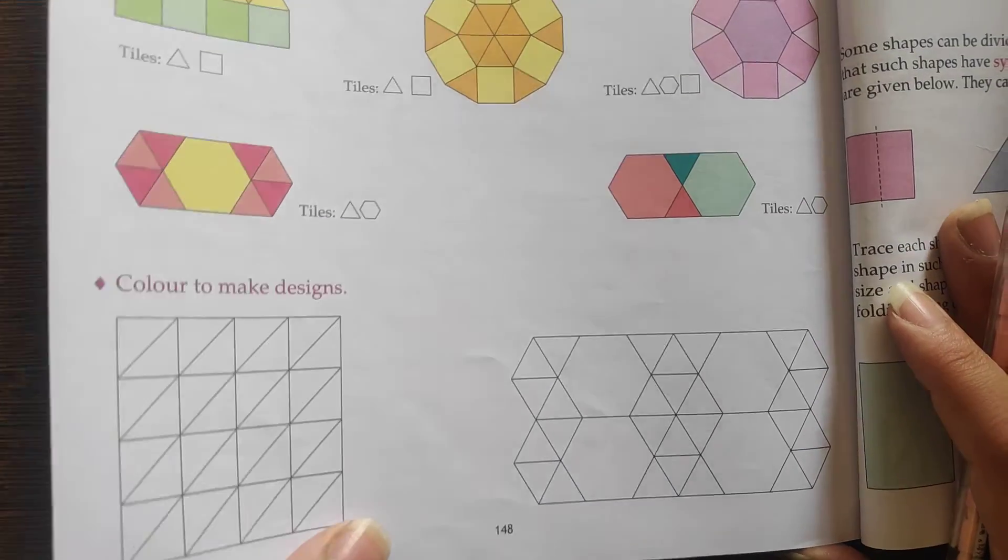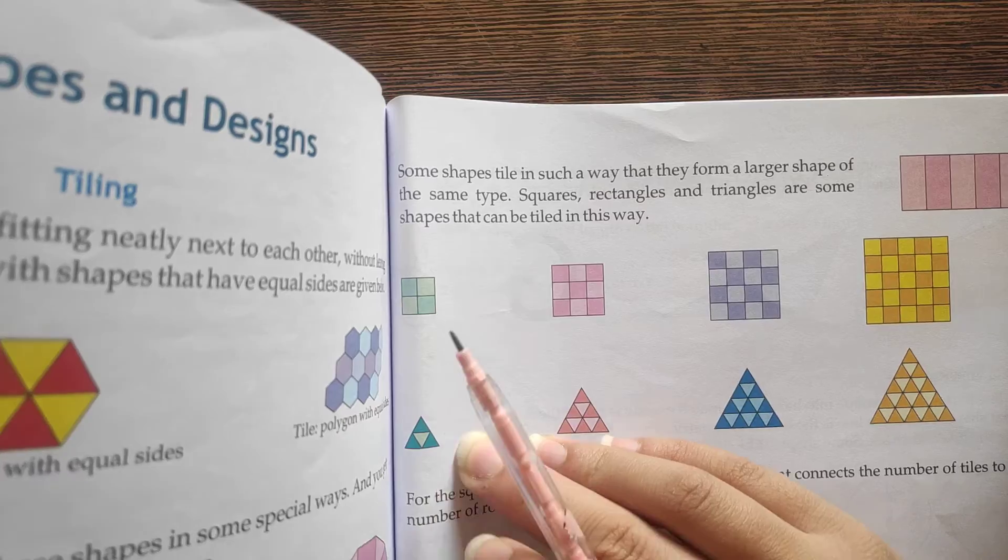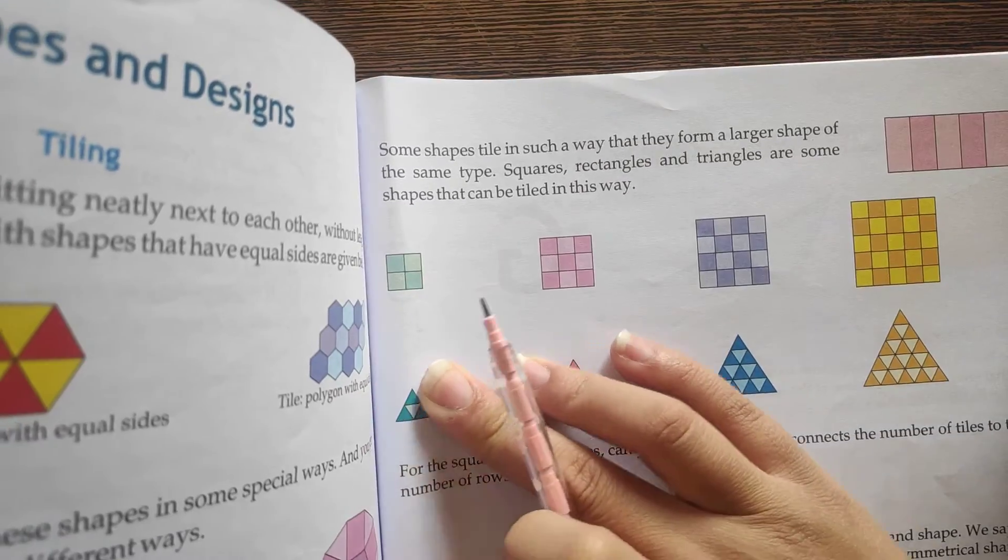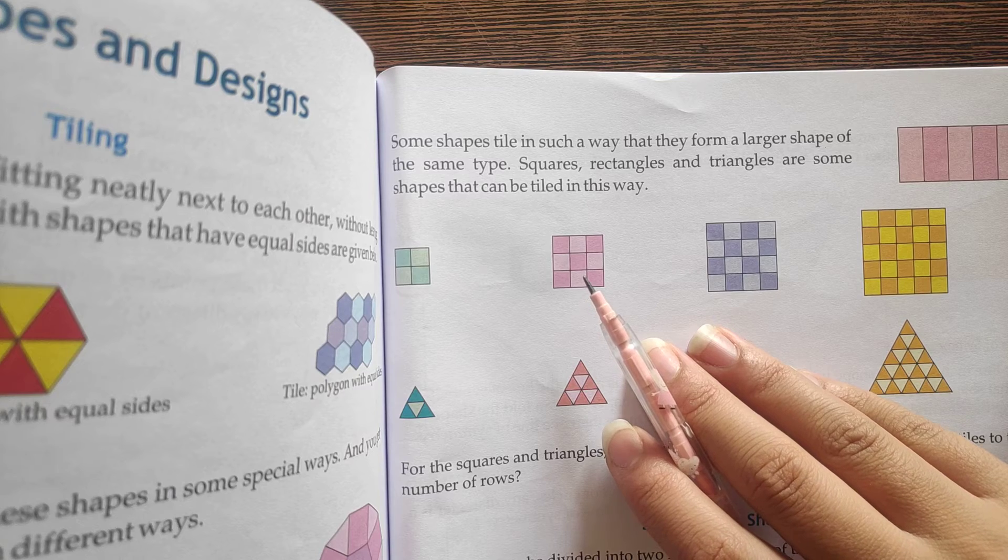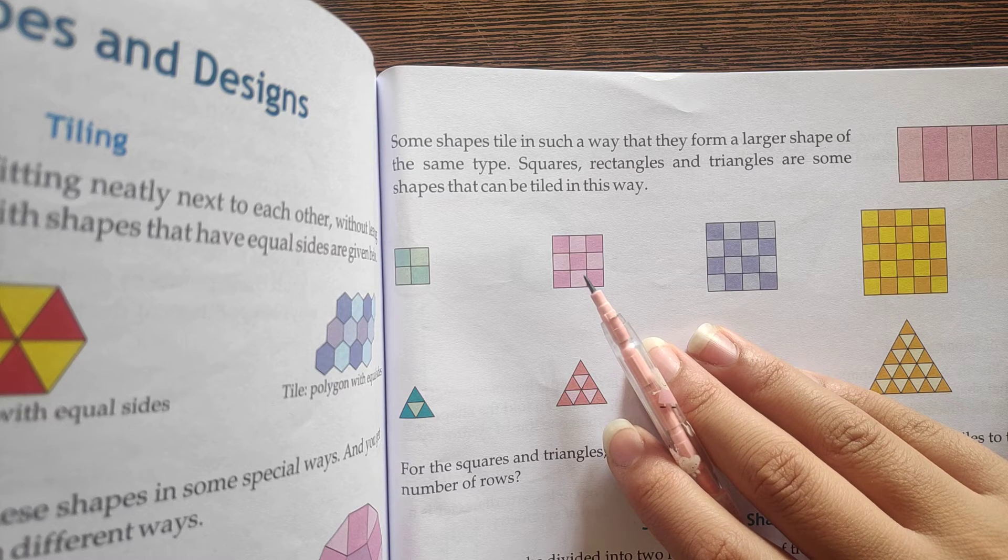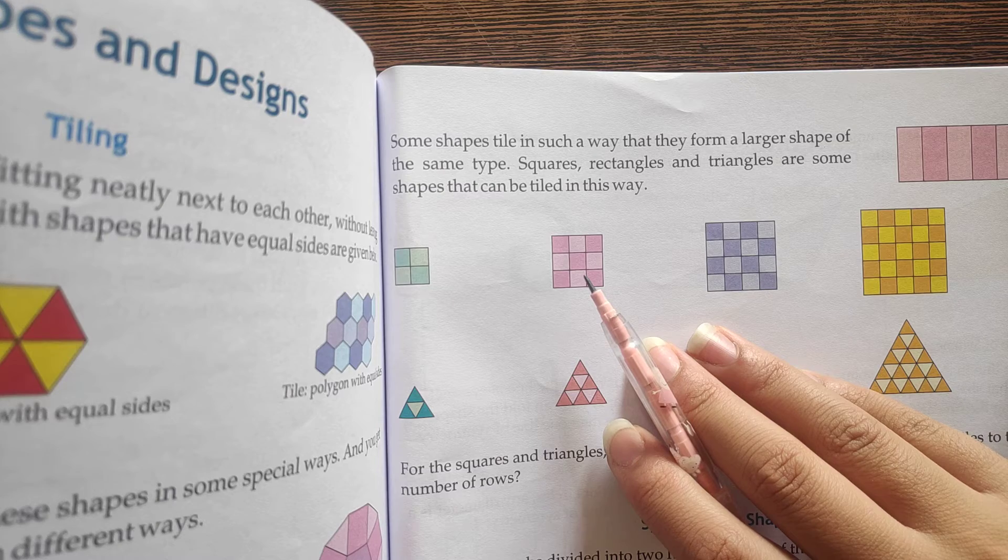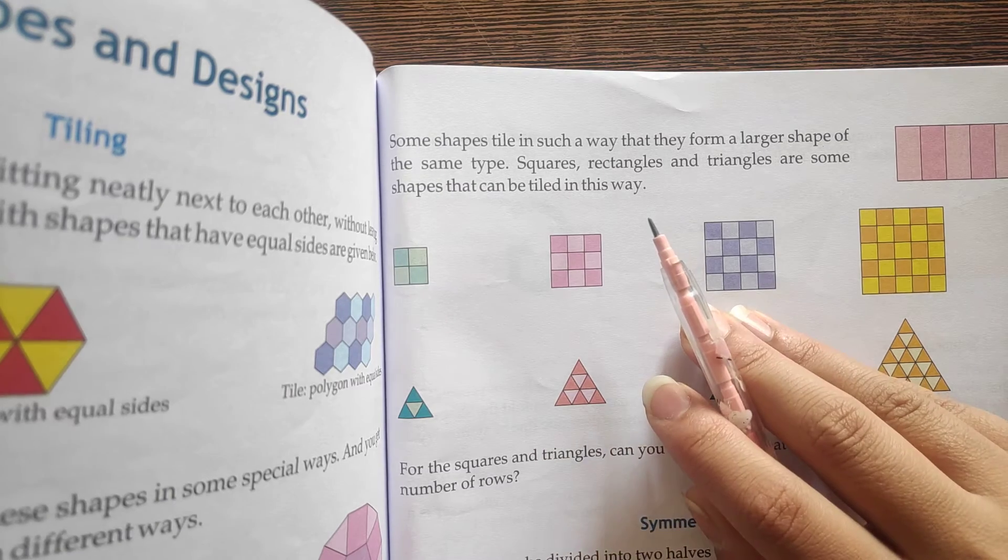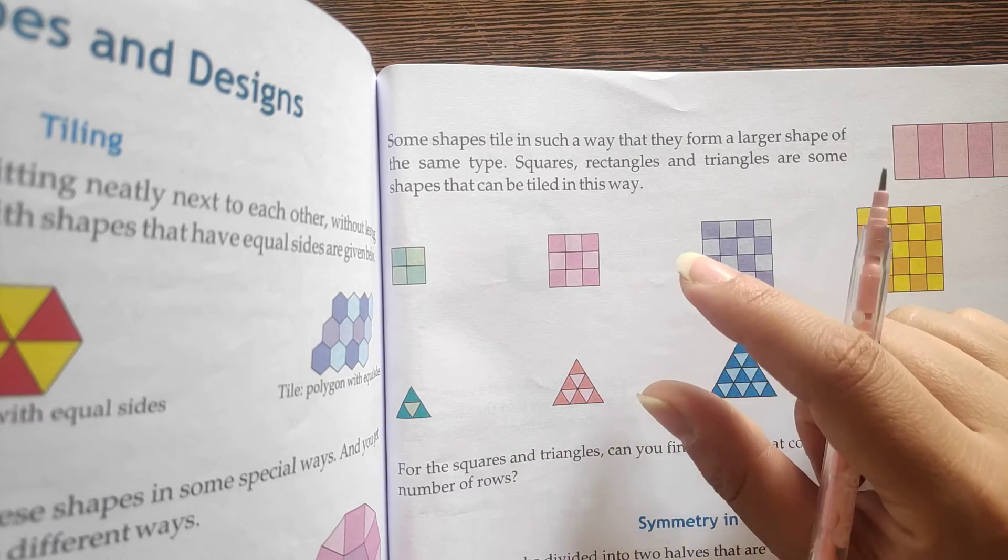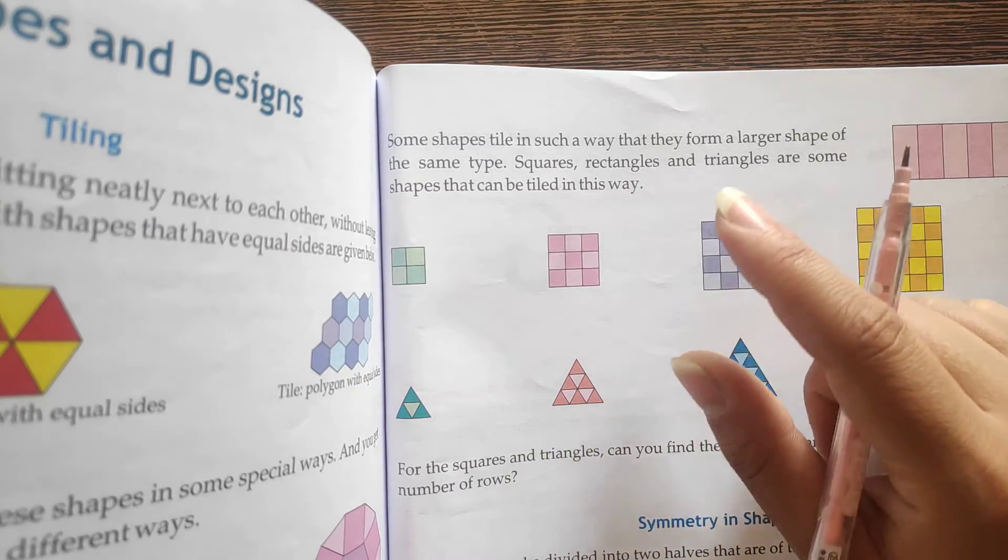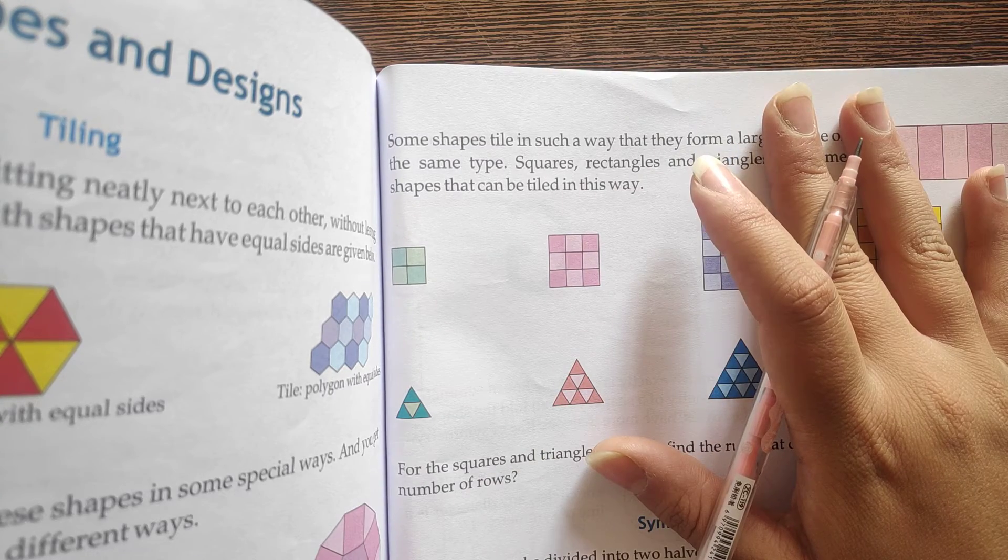Let's try this. And next we have some shapes tiled in such a way that they form a large shape of the same type. Squares, rectangles and triangles are some shapes that can be tiled in this way. So students, we are saying we have one shape, and this shape we can create a large shape of the same shape.